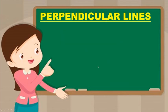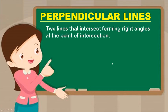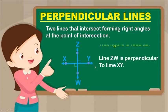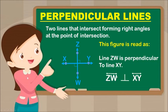Next is Perpendicular Lines. Two lines that intersect forming right angles at the point of intersection. We have two lines intersecting and forming a right angle. This figure is read as Line ZW is perpendicular to Line XY, and this is how it is written.